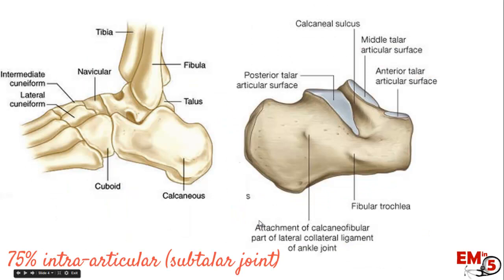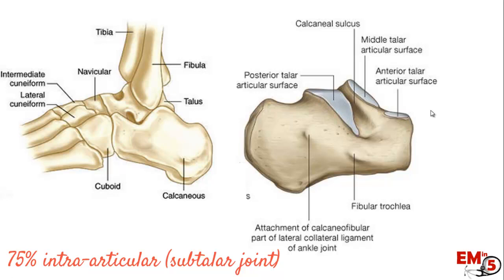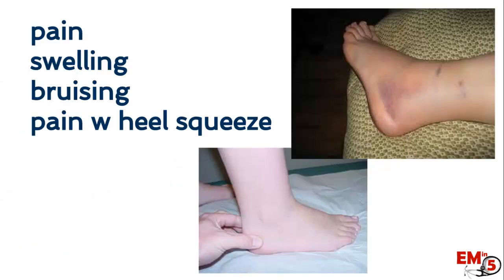The calcaneus has a lot of different articulations with the talus — the posterior, the medial or middle, and then the anterior articulated surface. Most of the fractures, about 75%, are intraarticular with the subtalar joint.